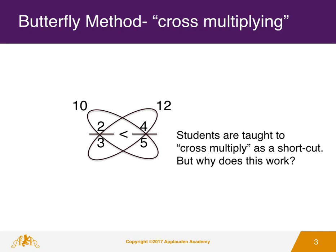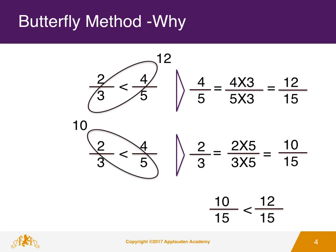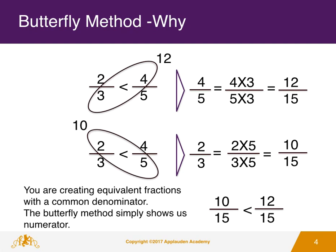But why does this work? When you multiply 4 and 3, you also multiply 5 by 3 in order to keep the fractions equivalent. By multiplying the numerator and denominator by the same number, you are actually making equivalent fractions. Now we know four-fifths is equal to 12-fifteenths. The same thing applies to two-thirds: two-thirds is equal to 10-fifteenths.